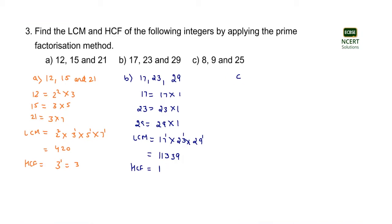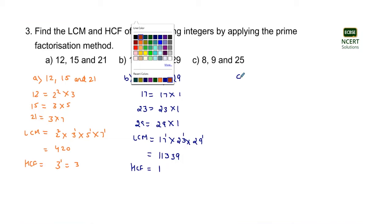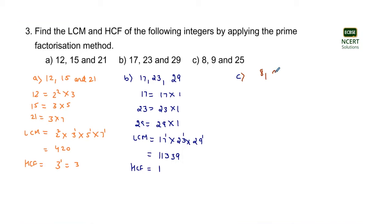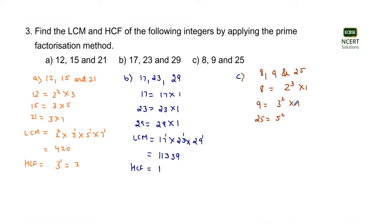Now coming to part C. The numbers provided are 8, 9, and 25. Performing prime factorization: 8 = 2 raised to the power 3, 9 = 3 raised to the power 2, and 25 = 5 raised to the power 2. We can also write these as 2³ × 1 = 8, 3² × 1 = 9, and 5² × 1 = 25.